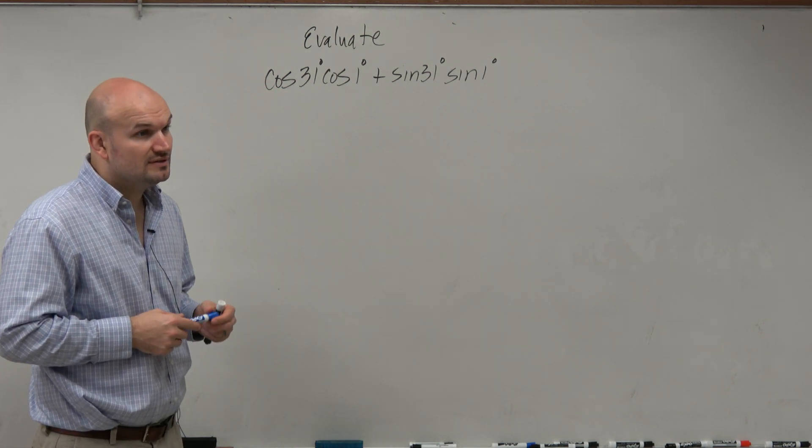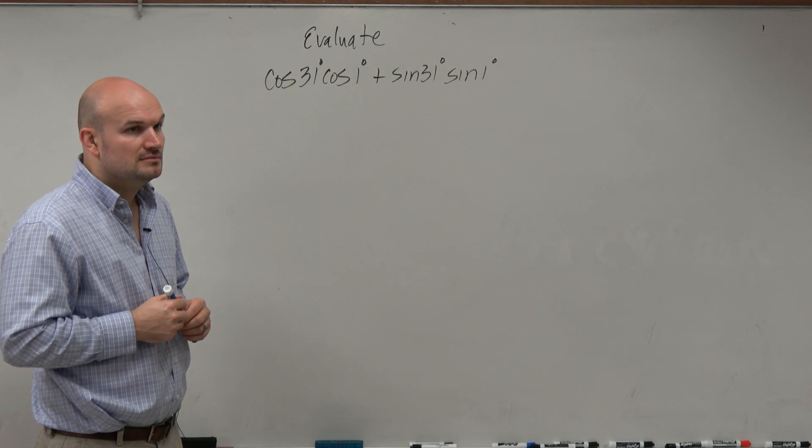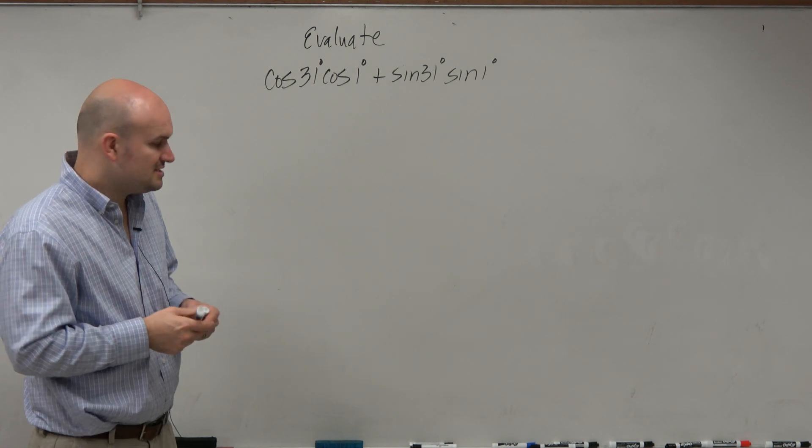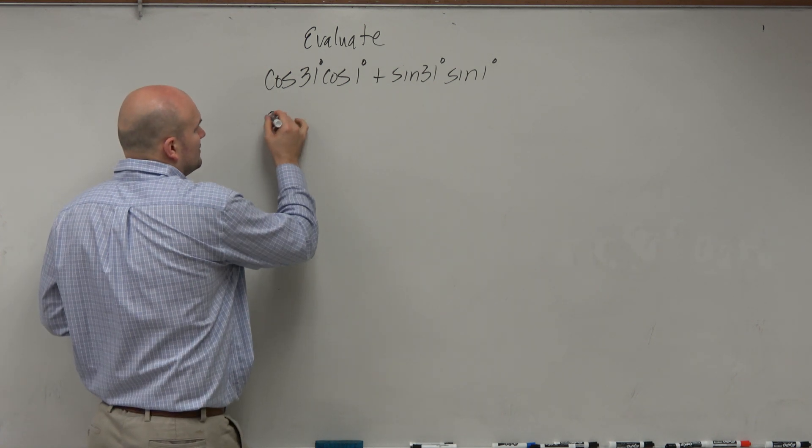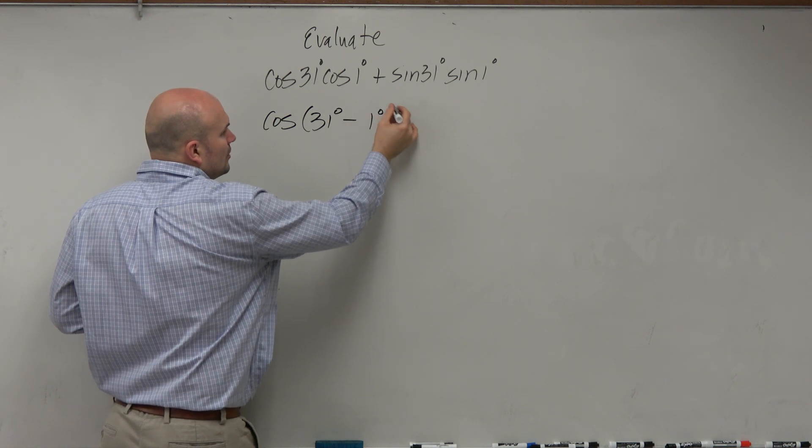Cosine of the sum or the difference of two angles. It's the difference of two angles. This is basically the same thing as cosine of 31 degrees minus 1 degree.